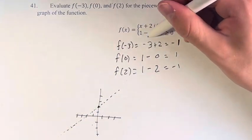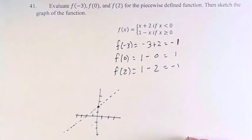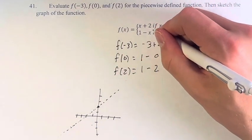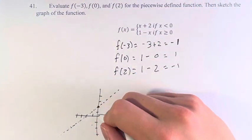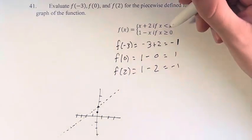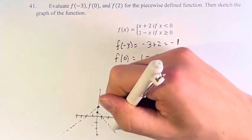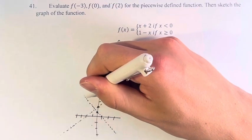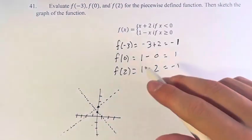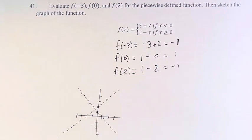And then we have 1 minus x, so that has a slope of negative 1 and a y-intercept of 1. So we start here, and we have a slope of negative 1, so it goes this way. And this isn't exactly a perfect slope, but it's close enough, right? This is positive, so this is negative slope.